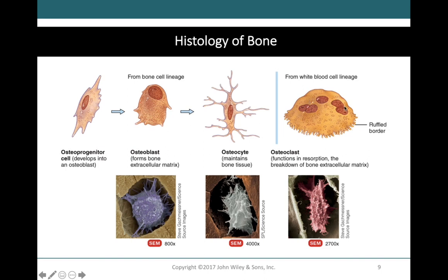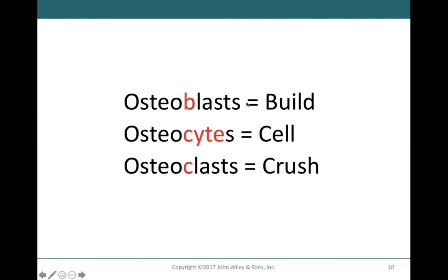Osteoclasts are formed from a few cells that have fused together and have a ruffled border — the end that attaches to bone functions like a suction cup, attaching very tightly and secreting digestive enzymes to break down bone, releasing calcium into the bloodstream. A helpful mnemonic: osteoblasts with a B build bone; blast cells are immature cells that secrete connective tissue matrix. Osteocytes are bone cells that monitor bone tissue. Osteoclasts crush or break down bone.